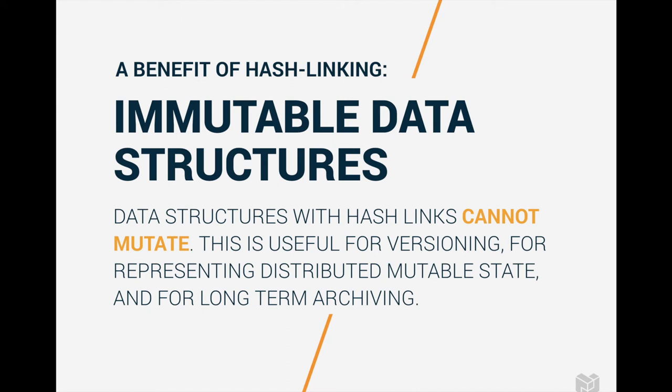The most fundamental thing that makes hash-linked data structures powerful is that you're creating immutable data structures. This notion of immutable data structures is prominent in computer science and has been around since the advent of programming languages. The main idea is that you can create data structures that do not mutate, and whenever you're creating a new version of data, you have a new identifier for that new version.